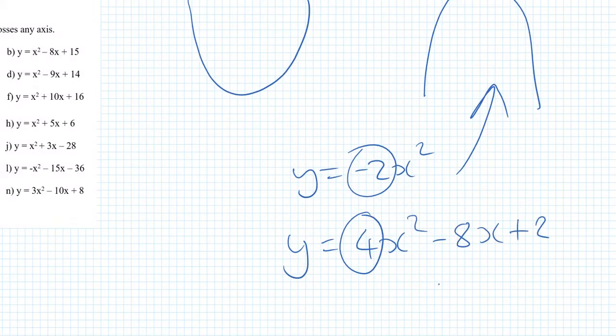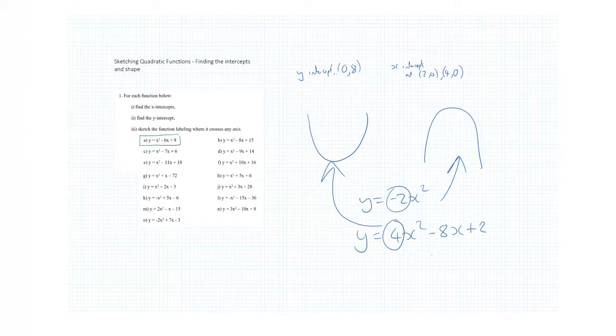Y equals 4x squared minus 8x plus 2. Well, that's got a leading coefficient that's positive. So that's going to be a smiley face. So this is what tells us about the shape.